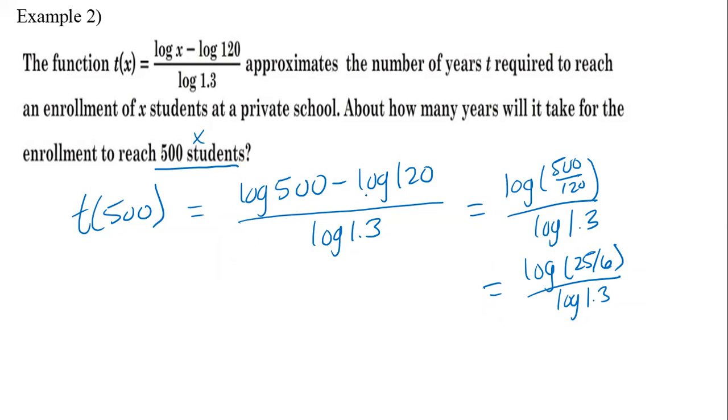But if you're fine writing all of this and not condensing using property number four, then you're good to go. So I'm going to put it in to find approximately how many years is it going to take? Good job. So it's going to take approximately 5.44 years. So almost five and a half years before the private school has an enrollment of 500 students.